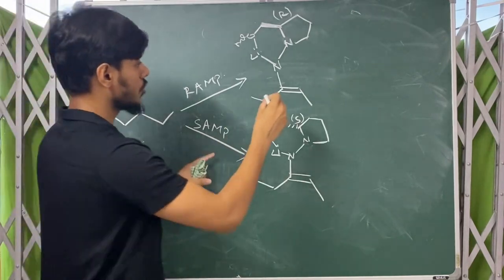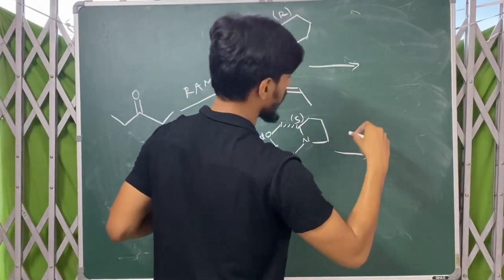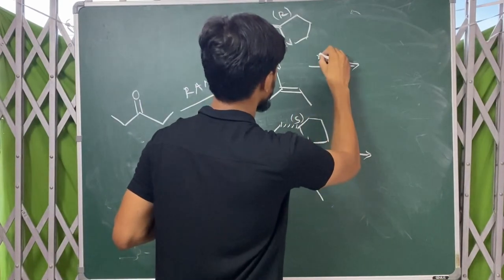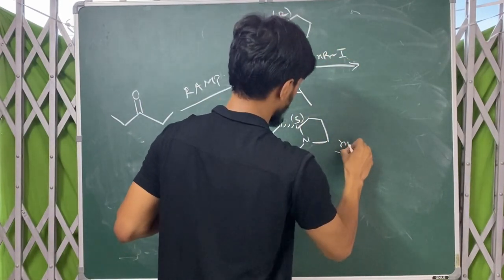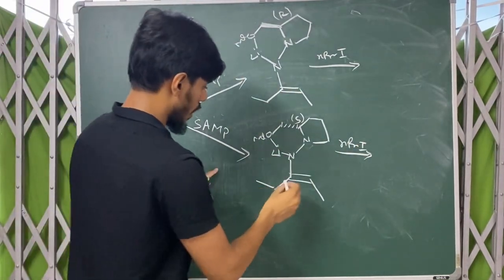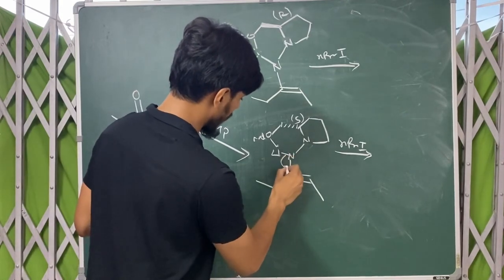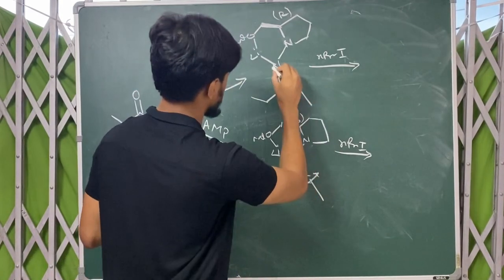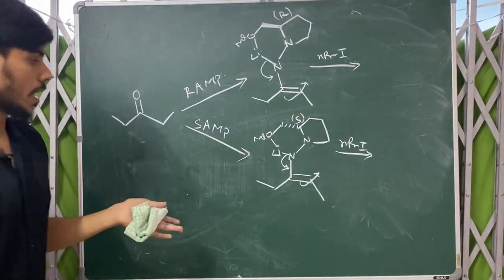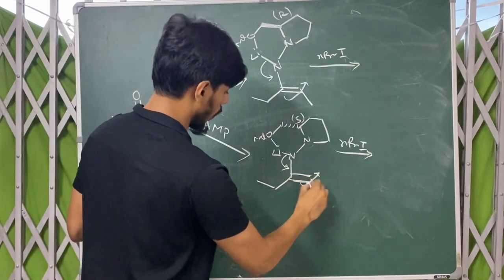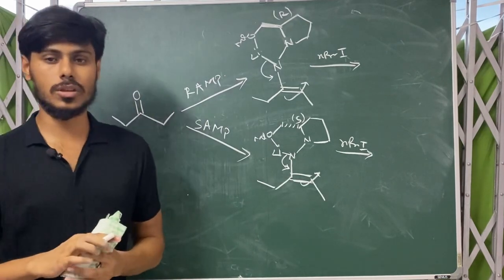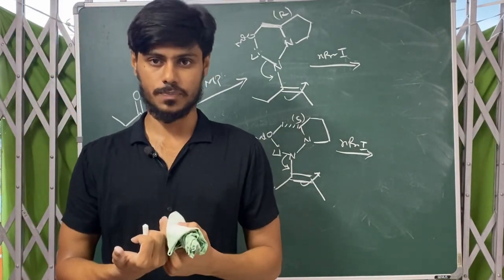If you treat both of these with an alkylating agent — in our question we have n-propyl iodide — the propyl group will be added. The double bond has two faces: one is the top face and another is the bottom face. The question is from which face the attack will take place.